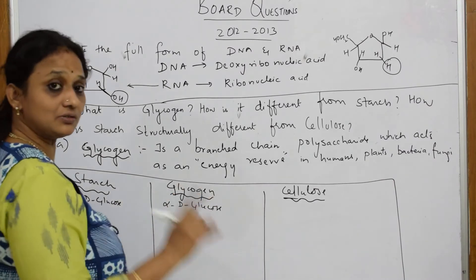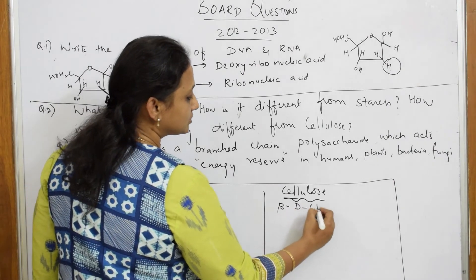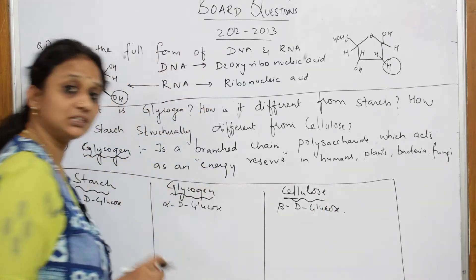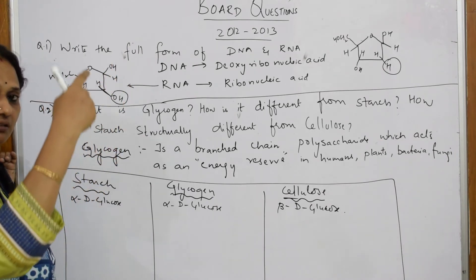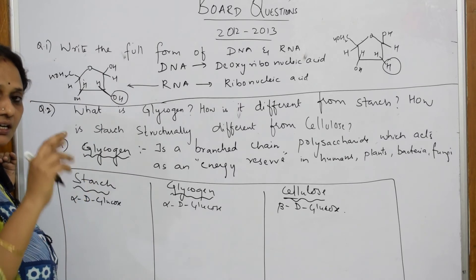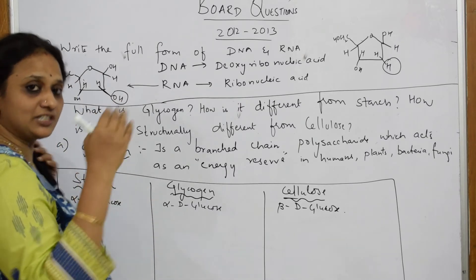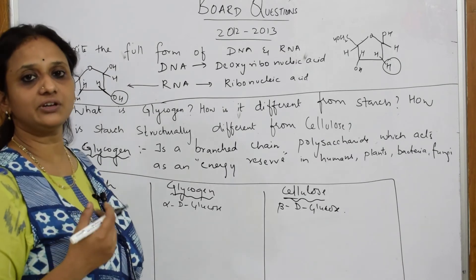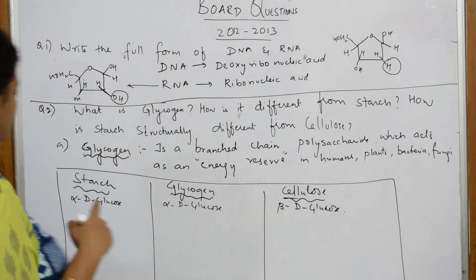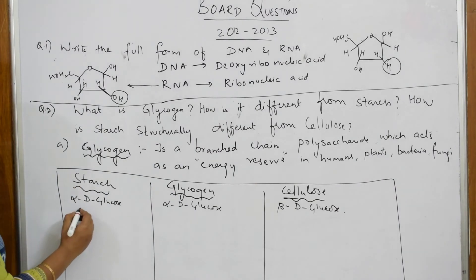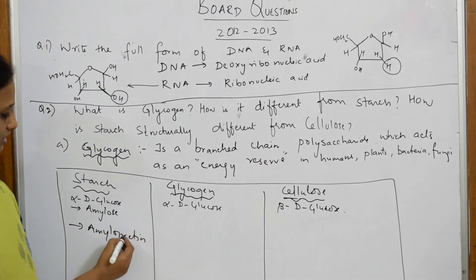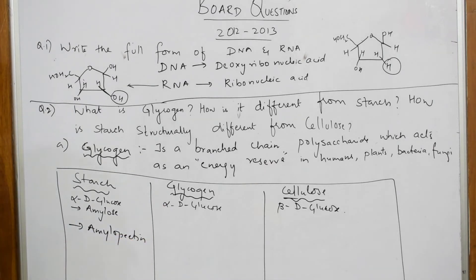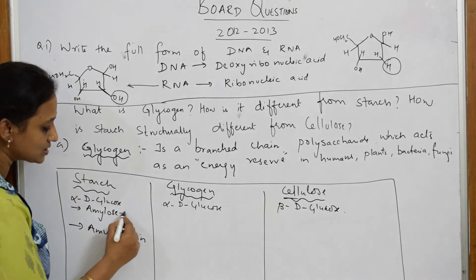Starch is made up of two units: amylose and amylopectin. Glycogen is not subdivided further. Amylose is a linear chain with C1 to C4 linkages. Amylopectin is branched, with C1-C4 linkages and also C1-C6 linkages. Glycogen resembles amylopectin — its structure is similar to amylopectin.